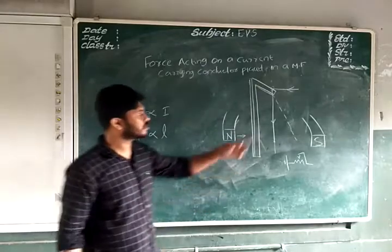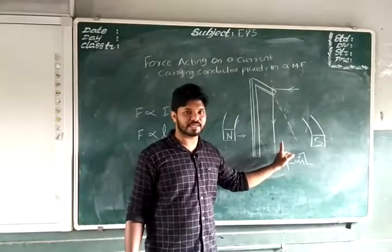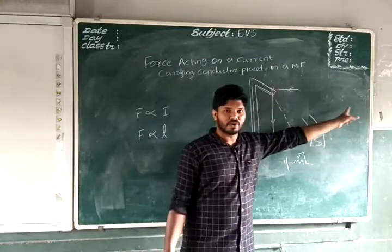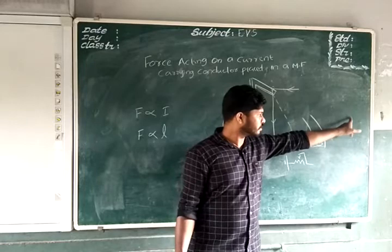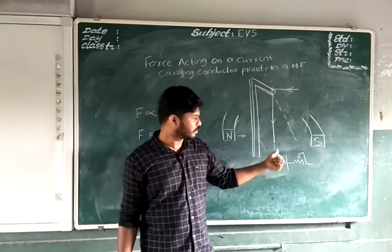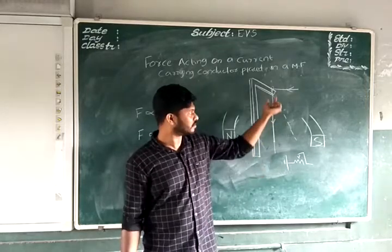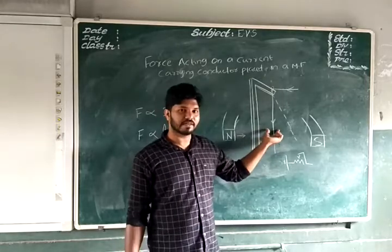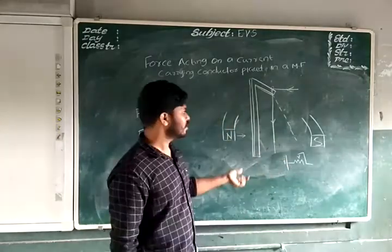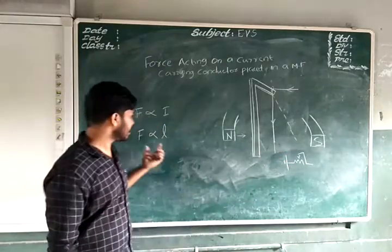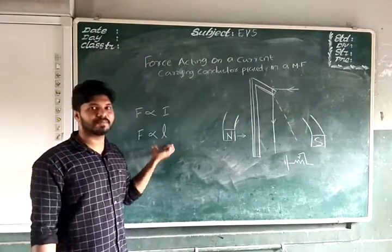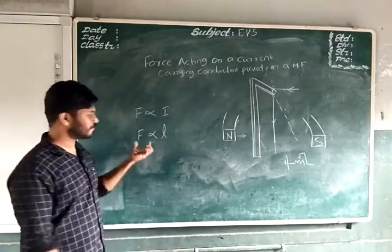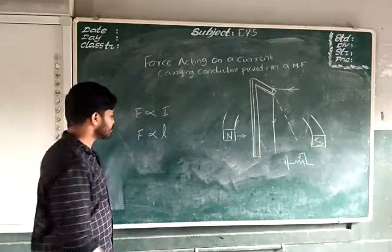Second point: F is directly proportional to the length of the conductor inside the magnetic field. The length of the conductor outside the magnetic field does not affect the force experienced by the conductor — only the length inside the magnetic field affects the force. So force is increased if the length of the conductor inside the magnetic field is increased. Therefore F is also proportional to L.